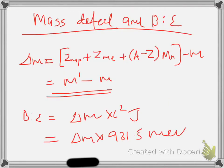Next we have mass defect and binding energy. During the formation of an atom from protons, neutrons, and electrons, a definite amount of mass is lost. The total mass of an atom is always less than the sum of the masses of the protons, neutrons, and electrons from which it is formed. In real practice, atomic mass is always less than the sum of the three, which highlights a mass defect during the formation of the nucleus.